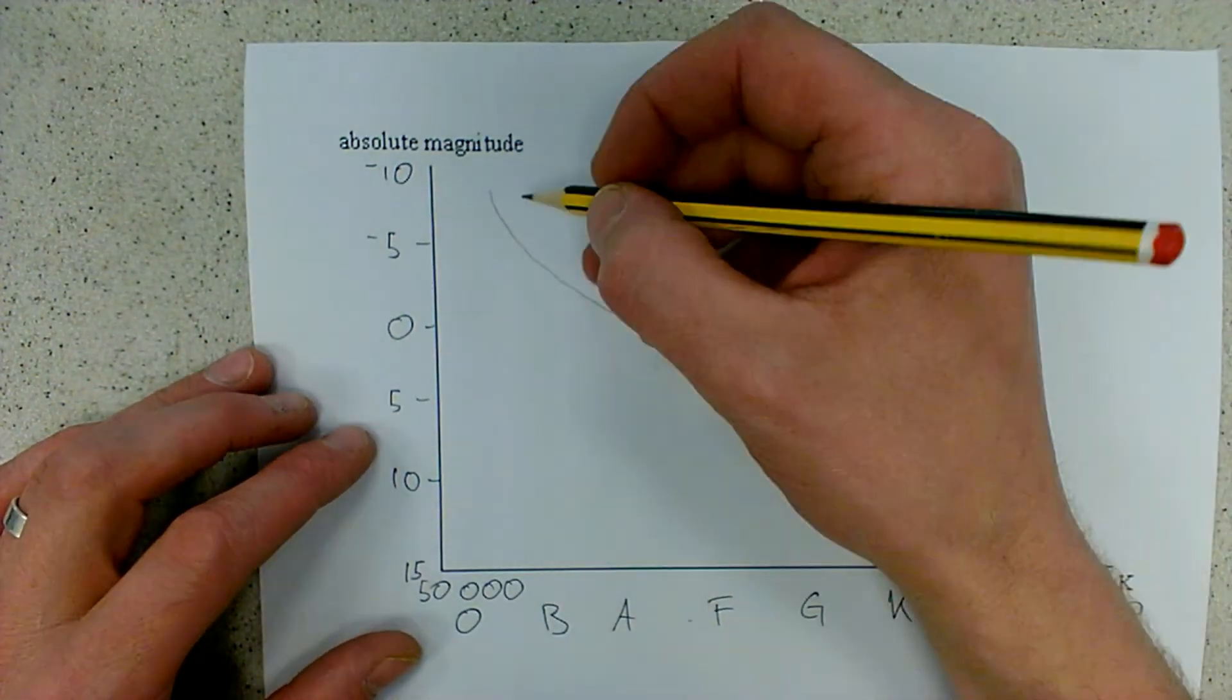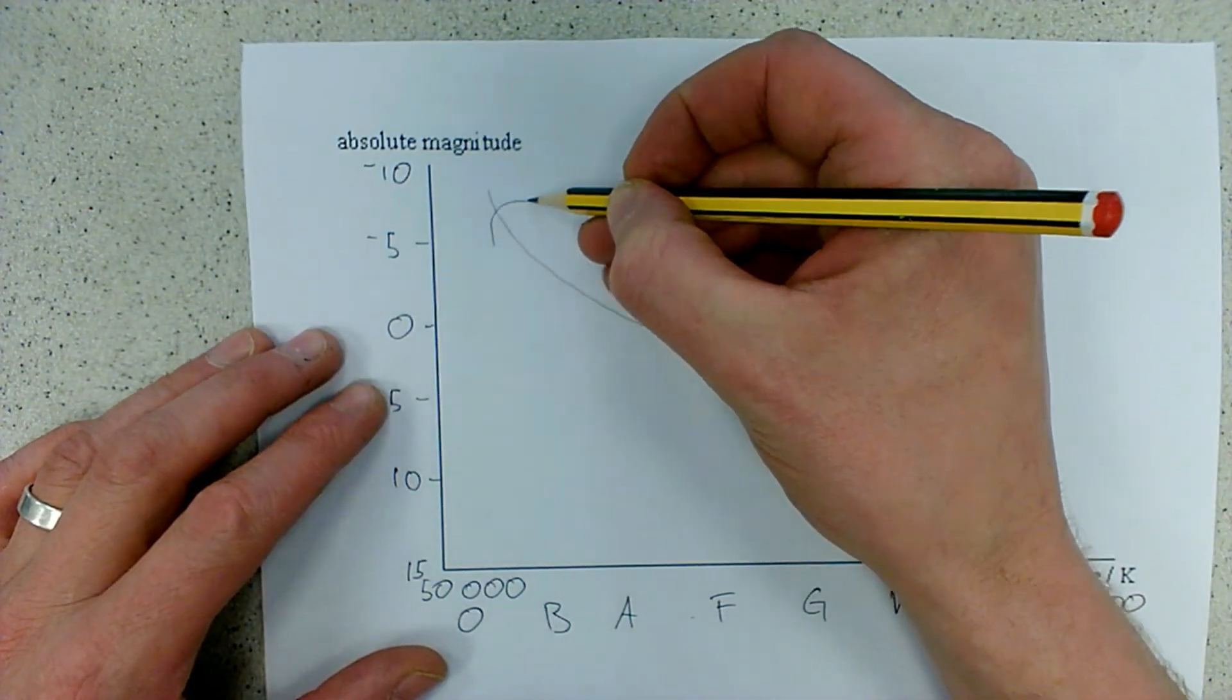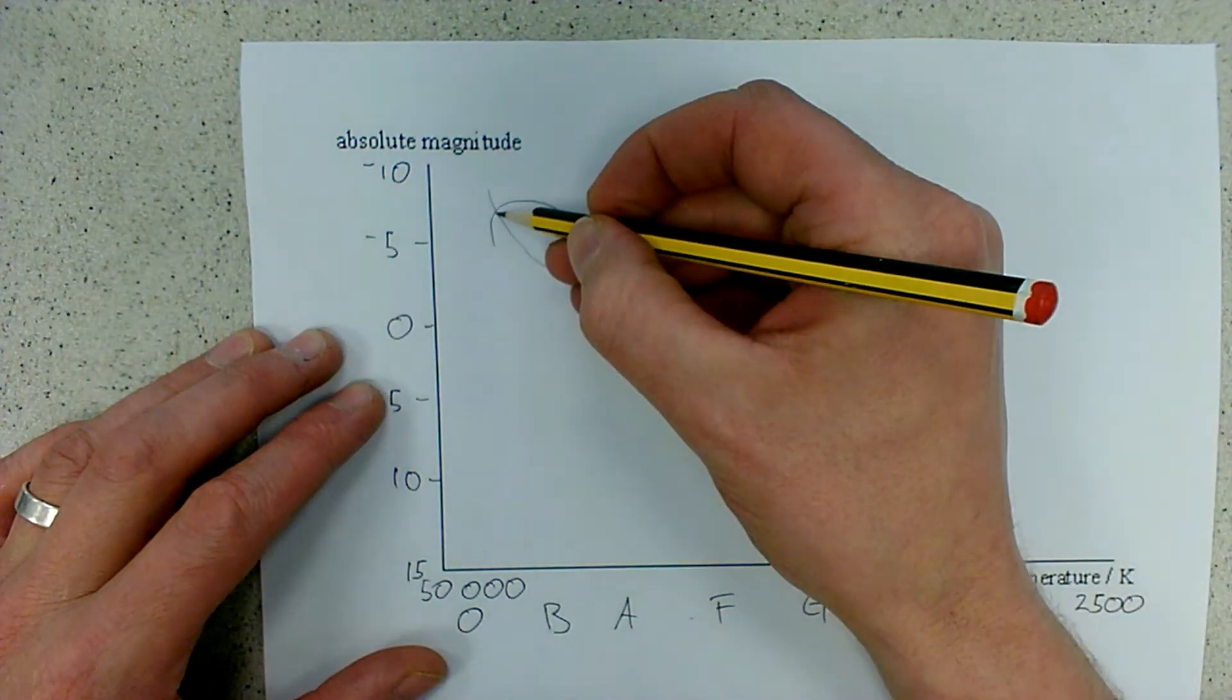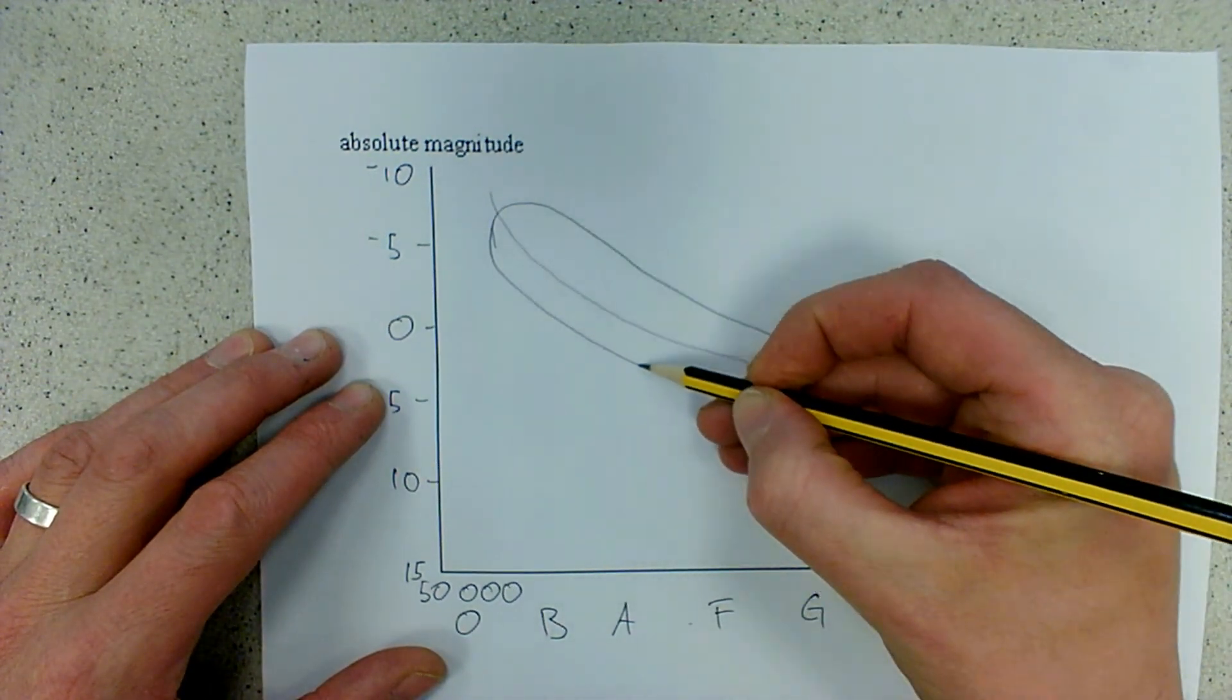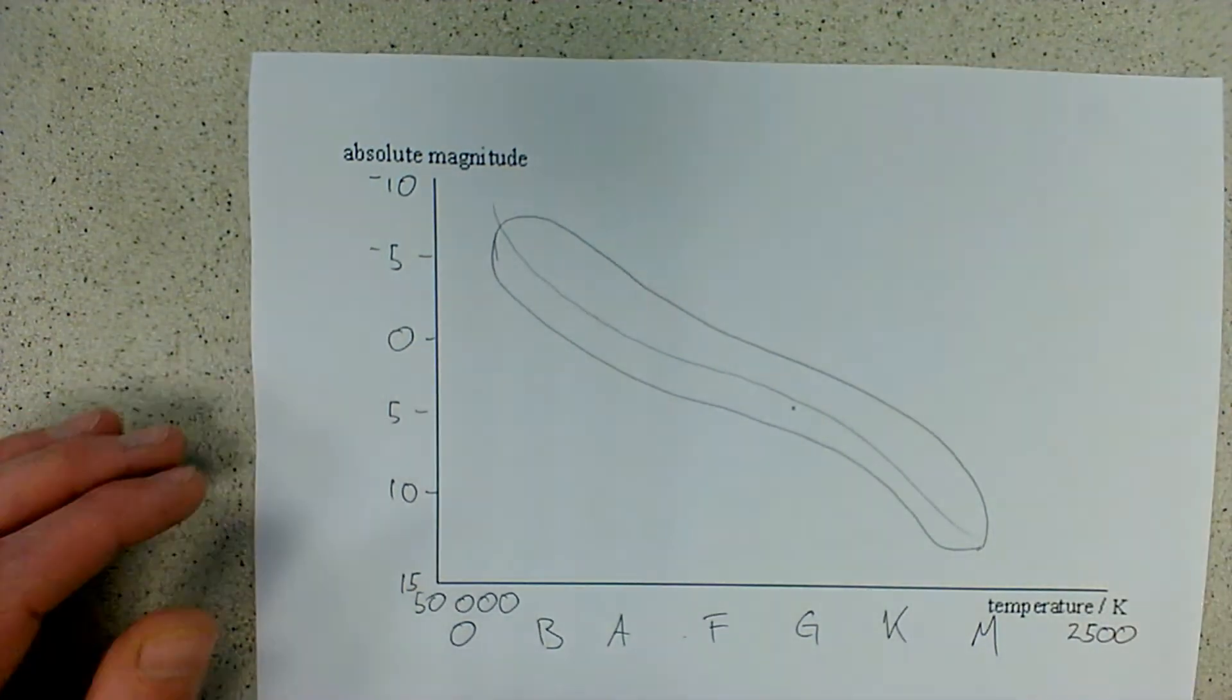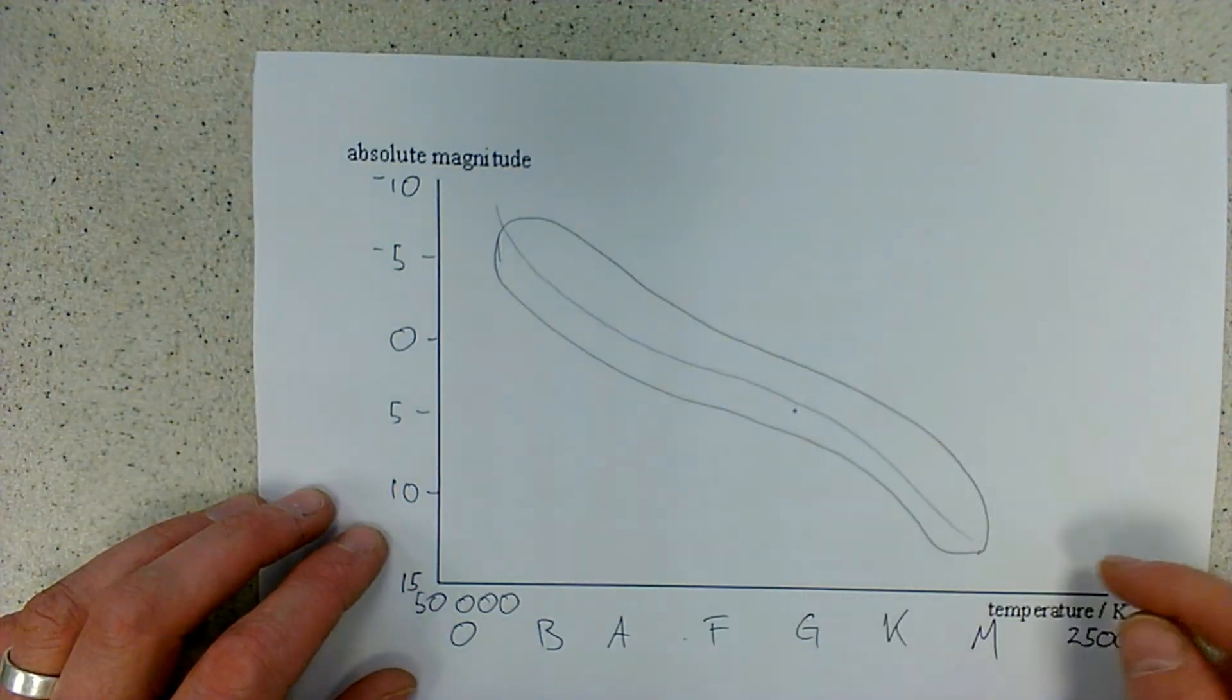But we must draw it as a band. So once I've drawn my basic shape I can just flesh it out a little bit. And that's my band of main sequence stars and I can rub out that section down the middle.